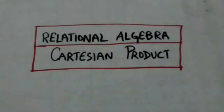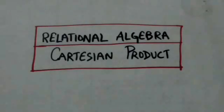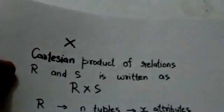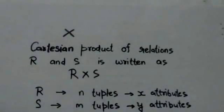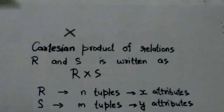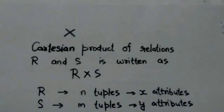Welcome back. In this tutorial we will study about the Cartesian product operation of relational algebra. Cartesian product operation is a binary operation, denoted by cross. The Cartesian product of relations R and S is written as R cross S.